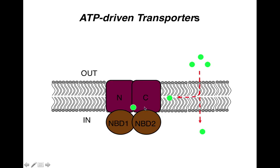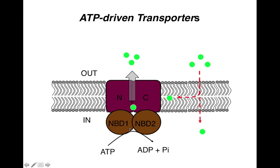Subsequently, ATP binds to the nucleotide binding domains and then hydrolyzes, forming ADP and phosphate and releasing a large amount of energy. It is this energy that causes a conformational change in PGP, by which it can now efflux the drug out of the cell.